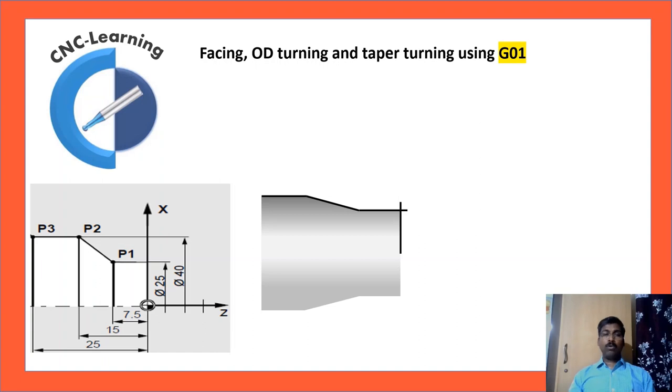Now we will see how to do facing, OD turning and taper turning using G01. In the figure, the dimensions are given. P1, P2, P3 coordinates are there.